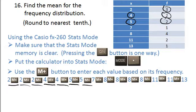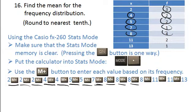Then you want to do a seven once, so it's seven M+. Then an eight four times, so it's: eight M+, eight M+, eight M+, eight M+. Then an eleven twice, so it's: eleven M+, eleven M+.